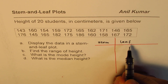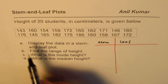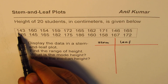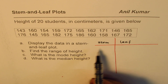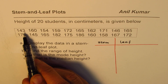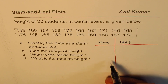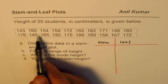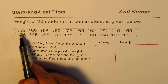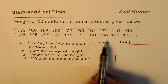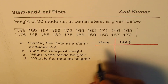In the leaf column we will only be writing the ones place. For example, for the number 143, the hundreds and tens place — 14 — will come in the stem part, and 3, which is in the ones place, will be written in the leaf part. Before entering values, we should have a general view of the data. It starts from 143 and the highest number seems to be 186.